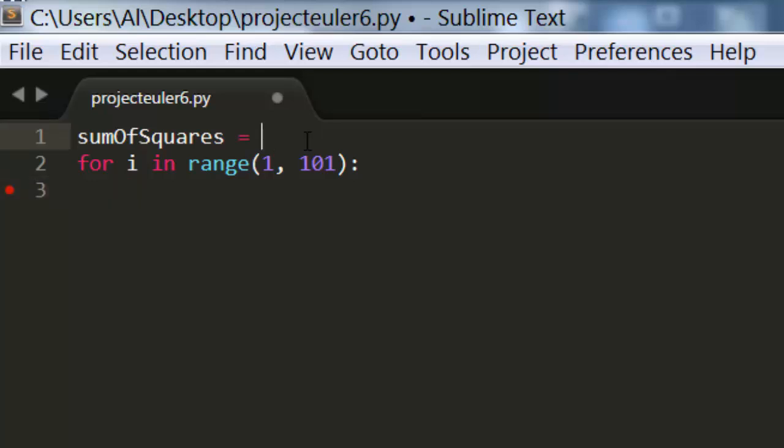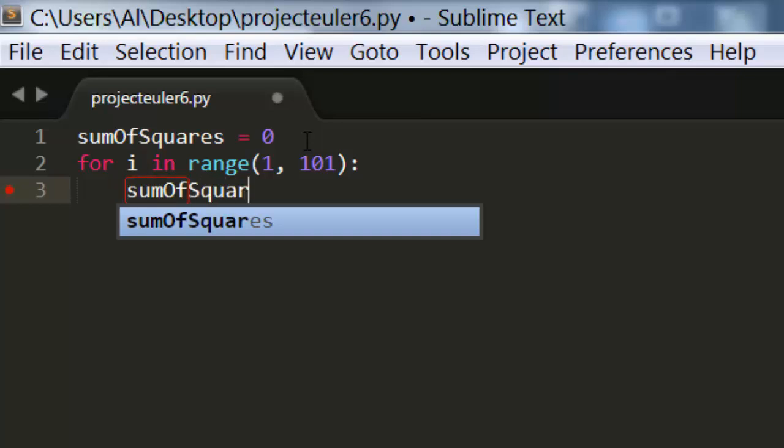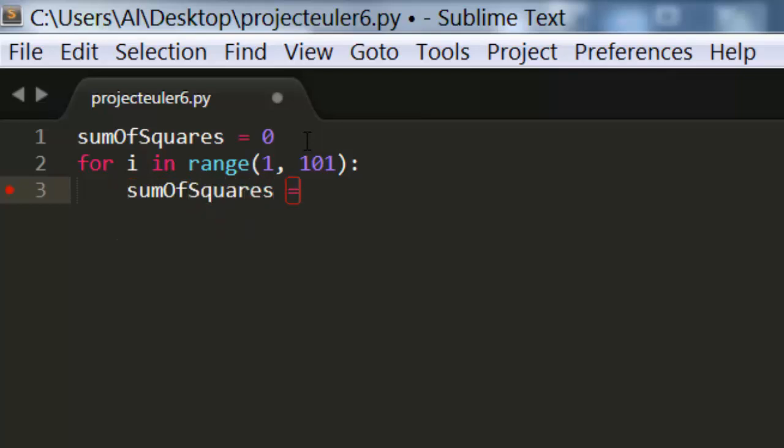So we're going to have sum of squares start off at 0, and then we're going to calculate these square numbers, which will be i times i, and add that to our running total here in the sum of squares variable. So on the first iteration through this loop, this will be 1 times 1, and it adds that to our sum of squares. And then on the next iteration, this will be 2 times 2, and it adds that to sum of squares. And so on and so on until finally it gets all the way up to 100 times 100.